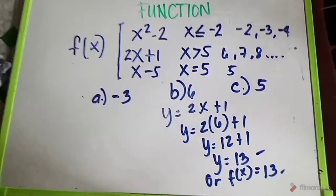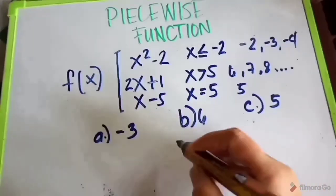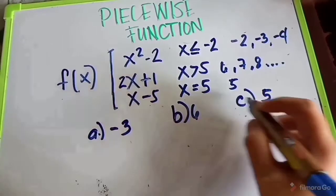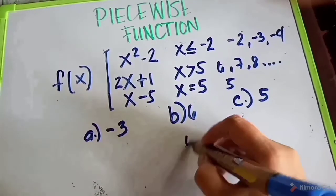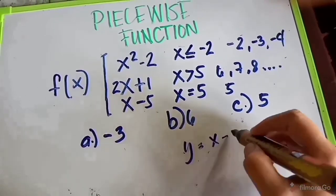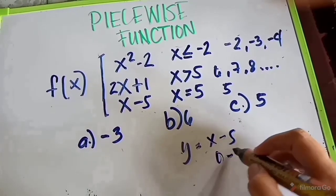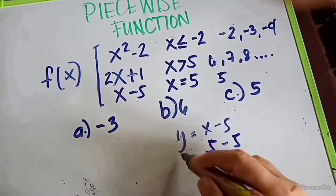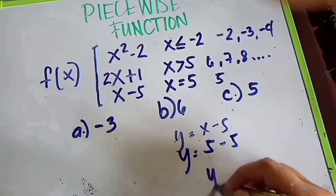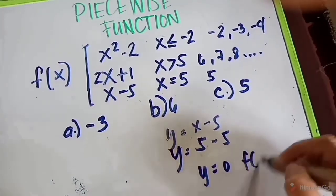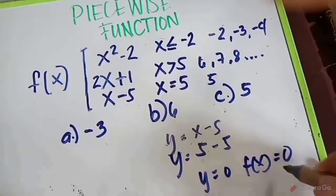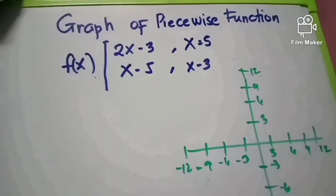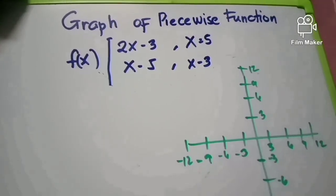For x equals 5, we use the piece x minus 5. So y equals 5 minus 5, which gives y equals 0, or f of x equals 0. This is the final answer for that part.